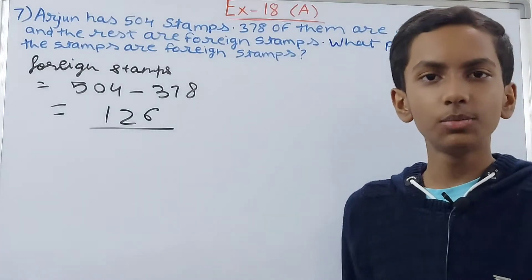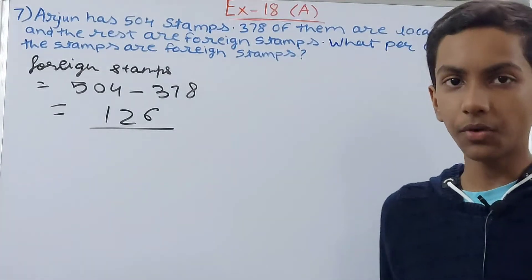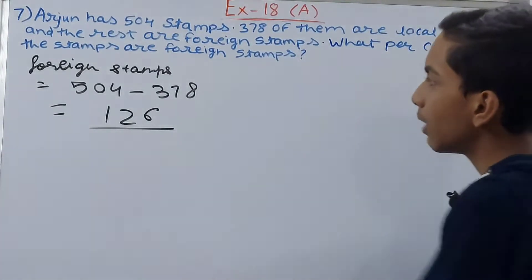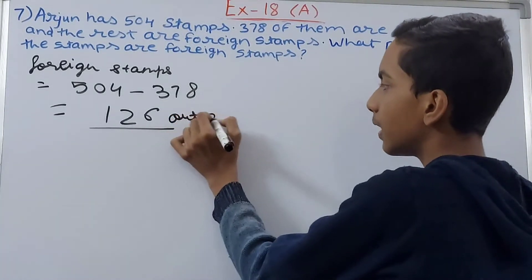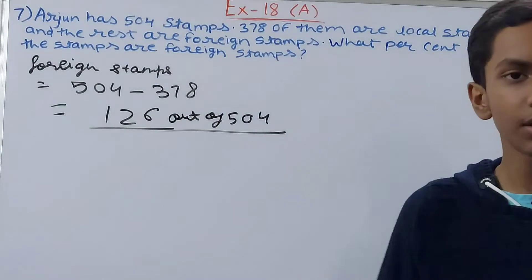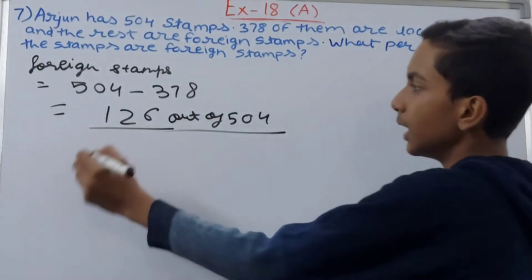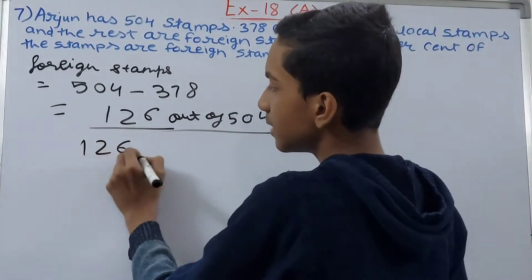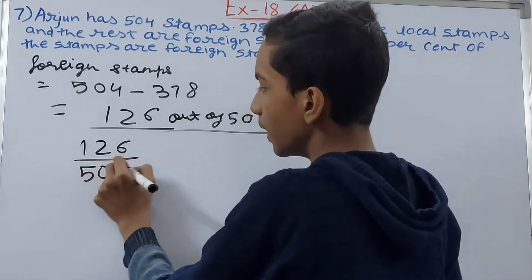Now this 126 has to be converted into a percentage. This 126 is out of 504, so we can write it as 126 upon 504.